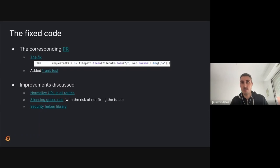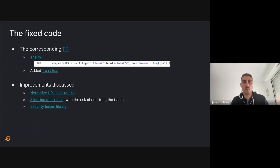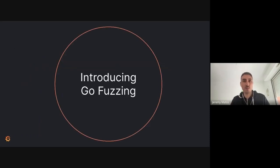One proposal was normalizing all URLs so that business logic never receives dot-dot-slash sequences. Another was a way to silence the gosec rule, though it was noted that risks getting blind to the issue rather than actually fixing it. The last — and most interesting — point was making a security helper library so other developers don't get tricked. This raised the question: how confident are we that just adding a slash in front fixes all possible path traversal issues? That's why we'll now discuss Go fuzzing.